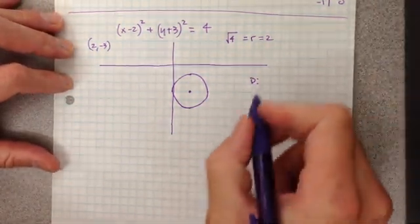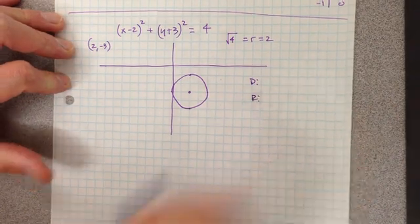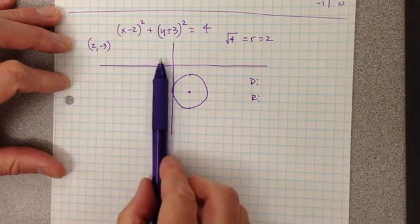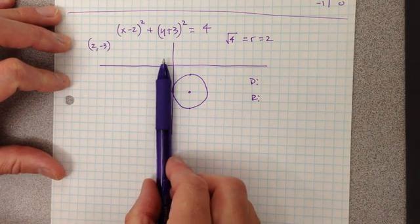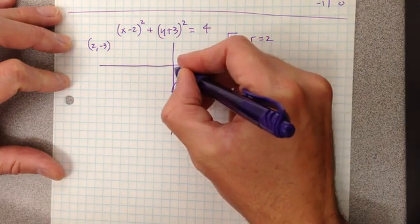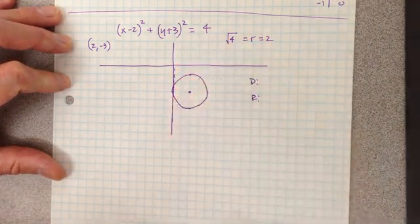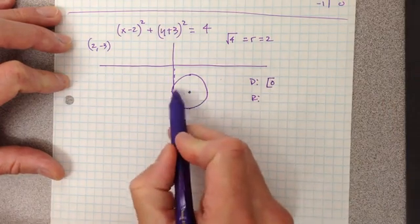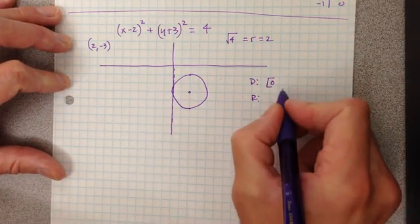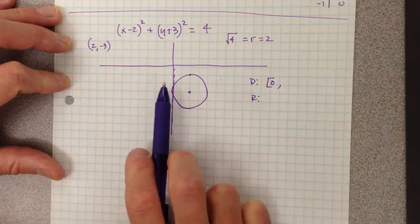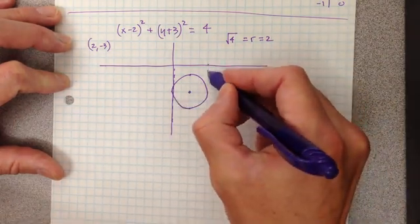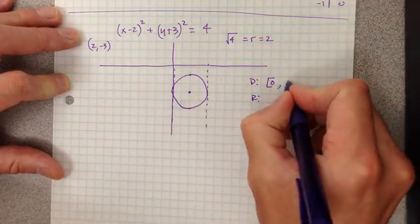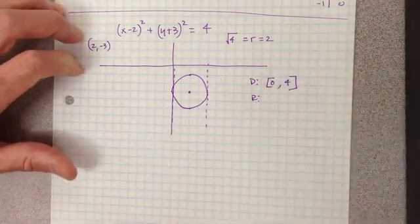We also need to look at our domain and range. Domain is the x-values represented by the graph; range is the y-values. As I slide across left to right, I first hit my graph at an x-value of zero — and since my circle is closed, I use a bracket there. I last hit my circle at an x-value of four, and that is also included.